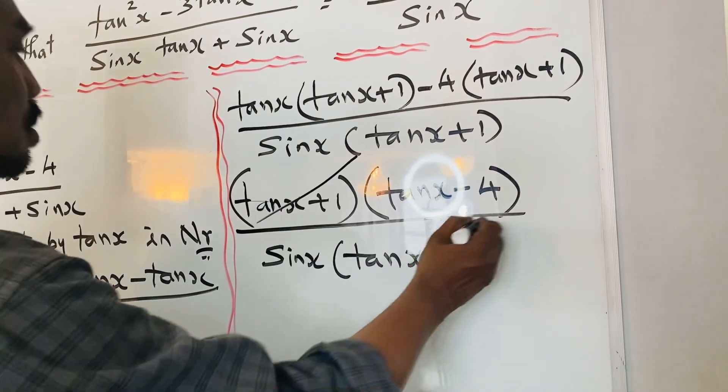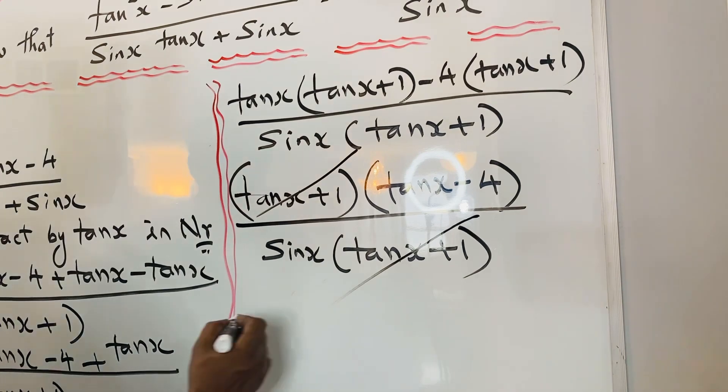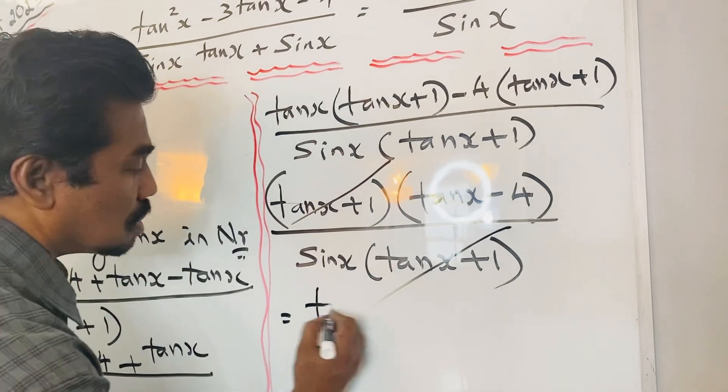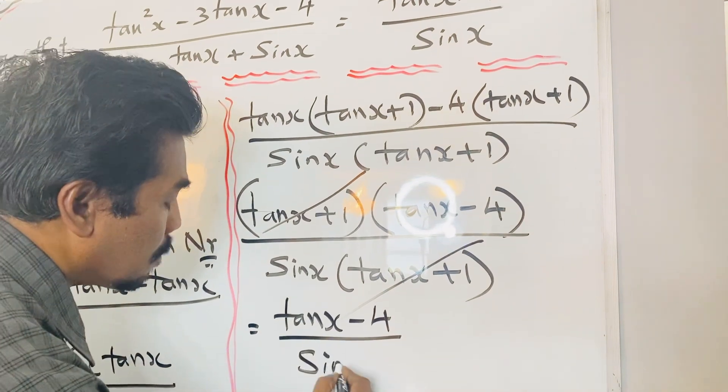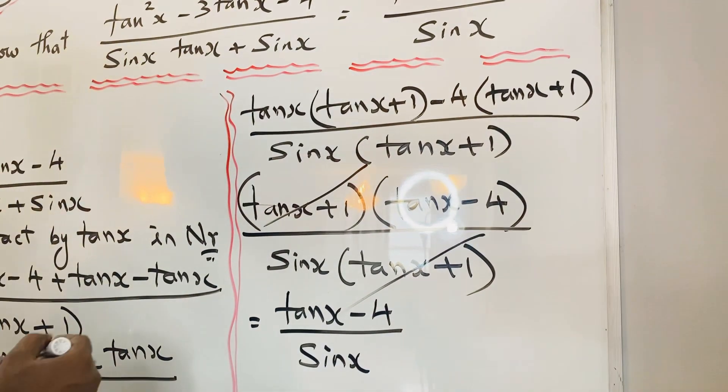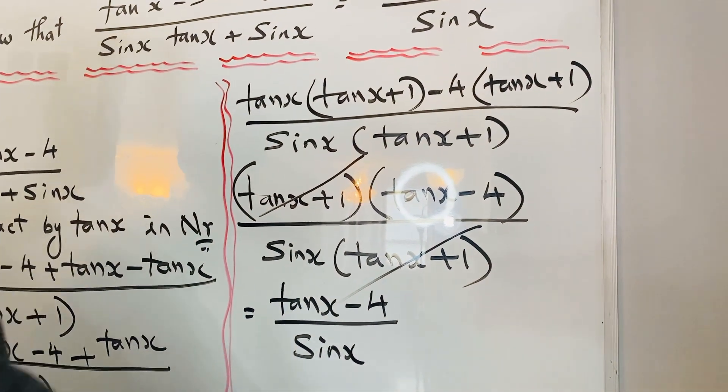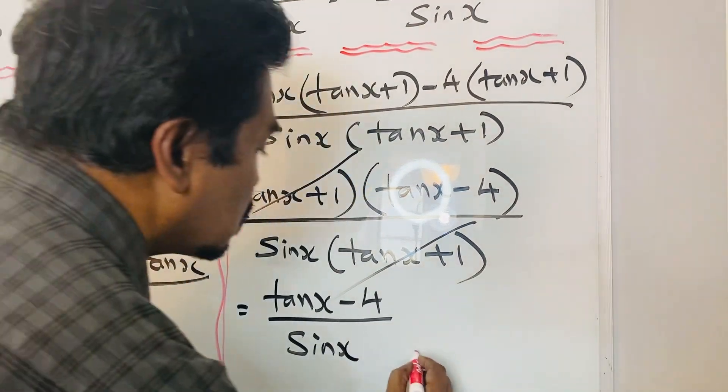So this tanx + 1, tanx + 1 get cancelled. So now what is the answer? Tanx - 4 over sinx. This is the thing that we need to prove in the right hand side equation. You can see it.